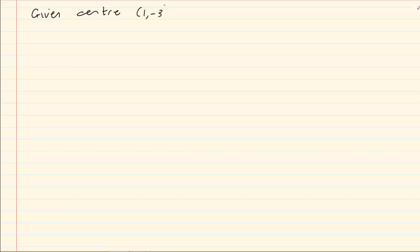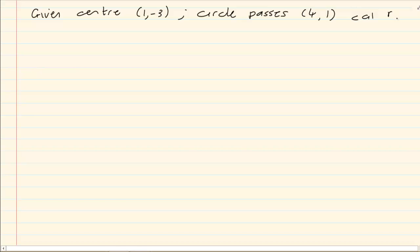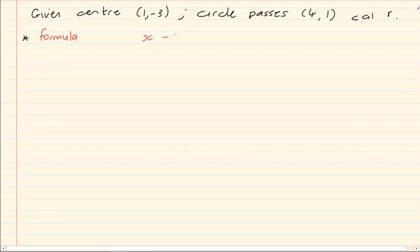Now, when you are given the center and another point, the main aim is to get r — exactly as you learned when doing circles with center (0,0). Given the center (1, minus 3) and that the circle passes through (4, 1), calculate r. Since the center is not (0,0), you must use the correct formula: (x minus a) squared plus (y minus b) squared equals r squared — not x squared plus y squared equals r squared, which is only for center (0,0).